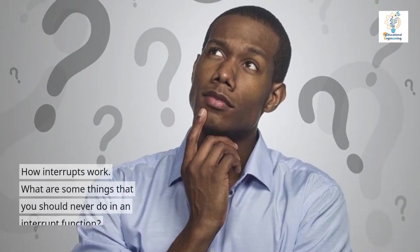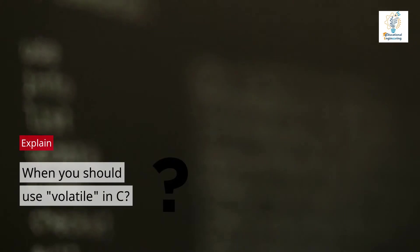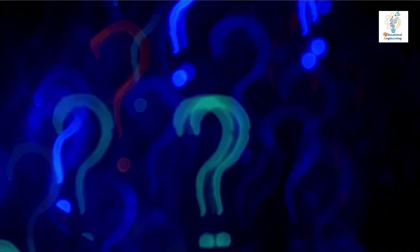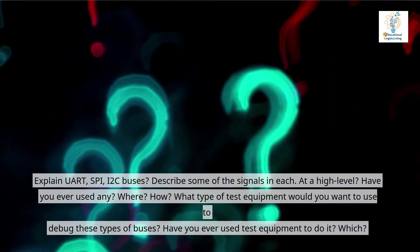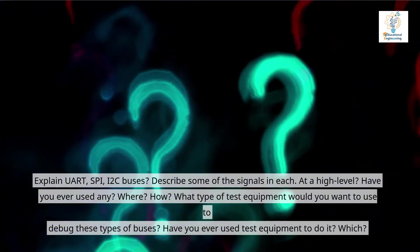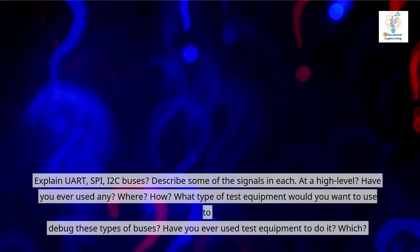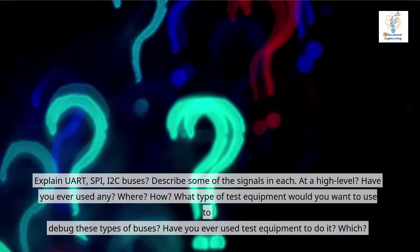How do interrupts work? What are some things that you should never do in an interrupt function? Explain when you should use the volatile keyword in C. Explain UART, SPI, I2C buses. Describe some of the signals in each at a high level. Have you ever used any? Where? How? What type of test equipment would you want to use to debug these types of buses?